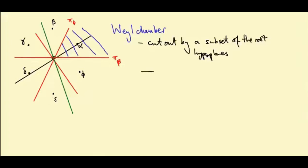So this gives us a subset of the roots, in this case, beta and phi, called the simple roots.